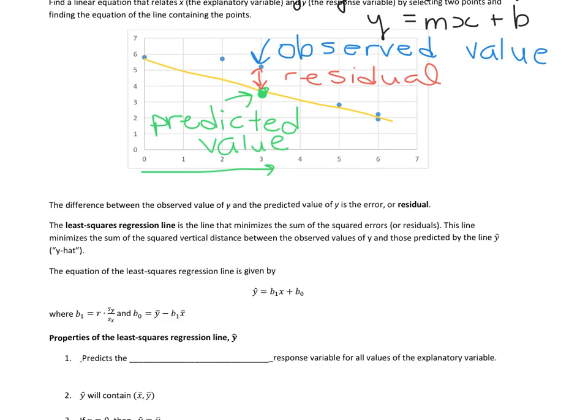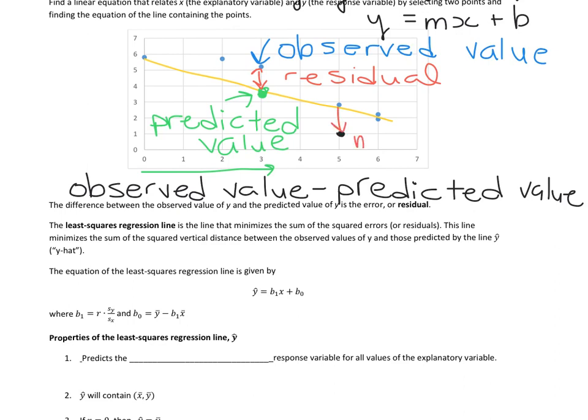The formula for the residual is the observed value minus the predicted value. Sometimes the residuals can be positive. In this case the residual is positive because the observed value is above the line. But if an observation was below the line, like right here, then this residual would be negative.